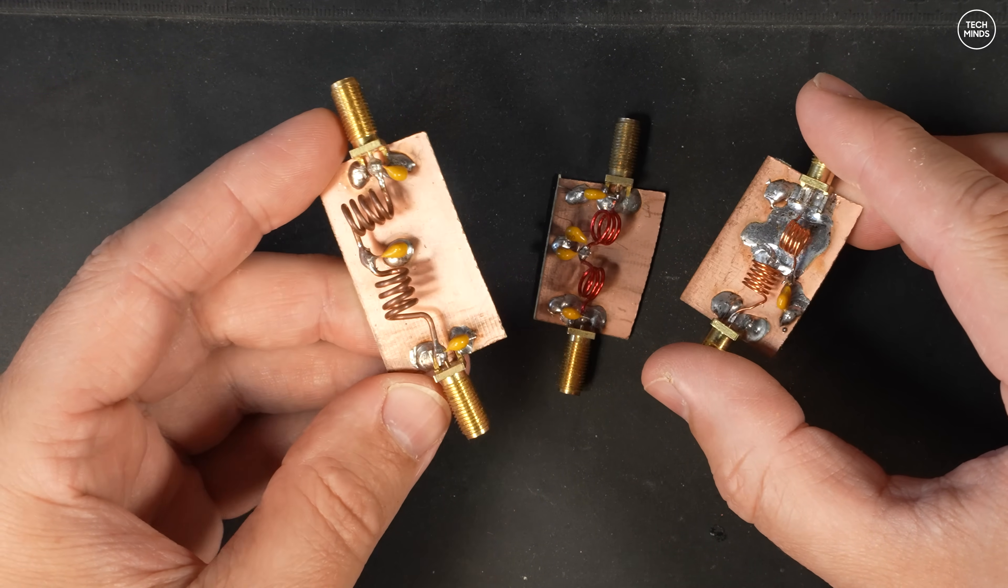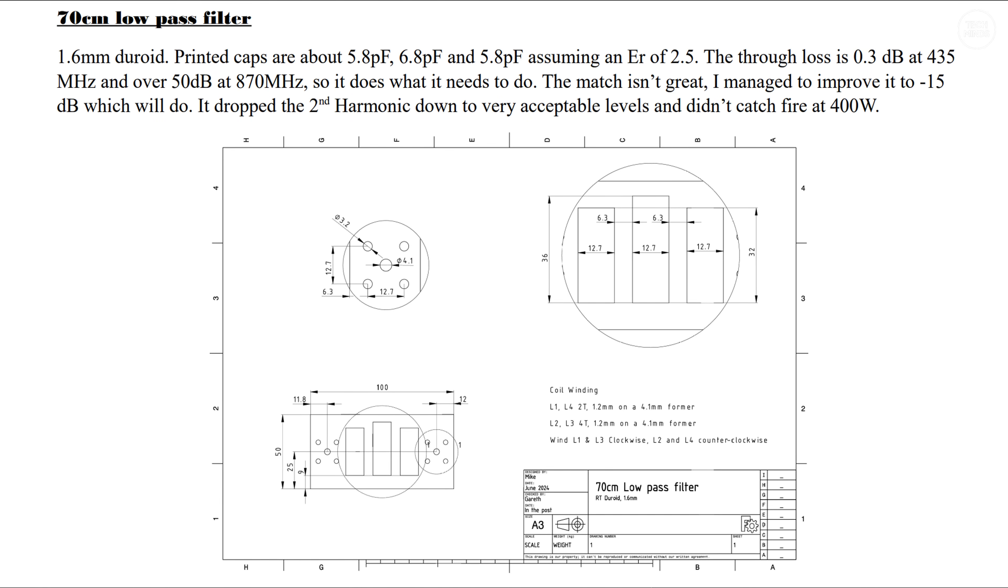My friend Mike G0 MJW sent me some plans on how to build a high power 70cm band low pass filter. These plans are actually based on the W6 PQL design that you can also find online.